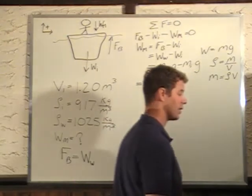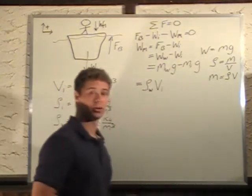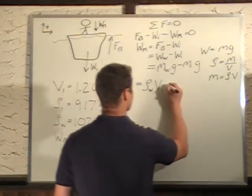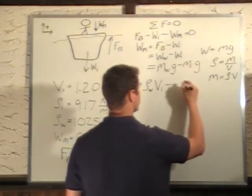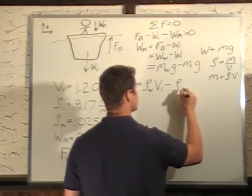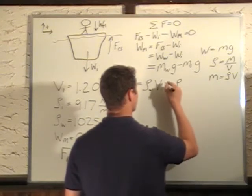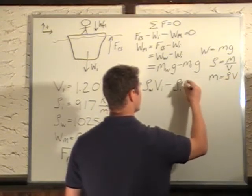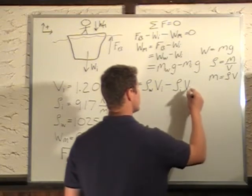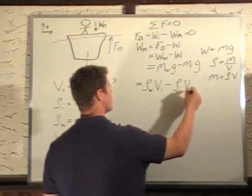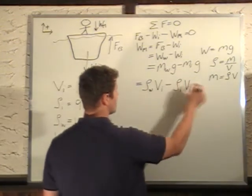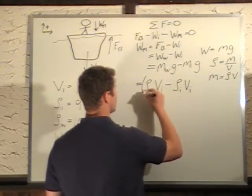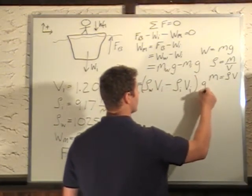The mass of the water becomes rho of the water displaced times volume of the water displaced. Now this volume of the water displaced is actually the same as the volume of the iceberg, because this is our displaced amount. So we can just call this V_I, the volume of the iceberg, minus rho of the ice times the volume of the ice. So this will give us the mass of the iceberg and this will give us the mass of the water displaced. And since these are both multiplied by G, I'm going to factor G out.